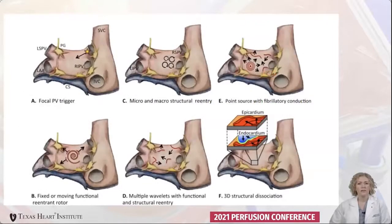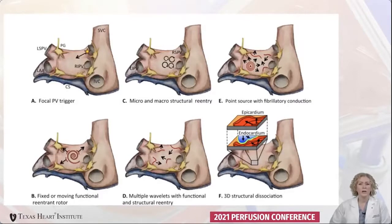There are many different mechanisms of AFib, which is a heterogeneous disease, and it can have a variety of different electrical abnormalities. There can be single or multiple foci of abnormality, multiple reentrant circuits, or multiple wavelets. The majority of these abnormalities are found in the left atrium and near the pulmonary veins, but they can also arise in other areas of the heart.